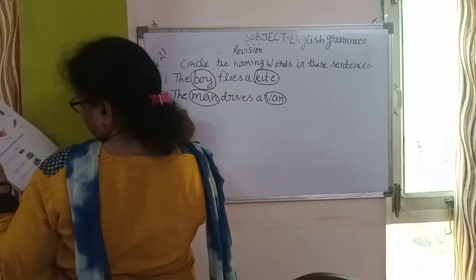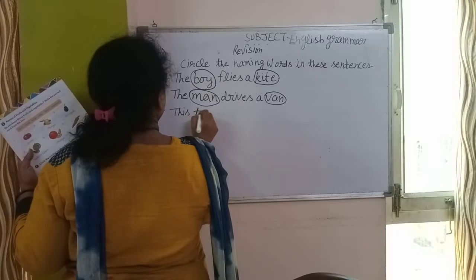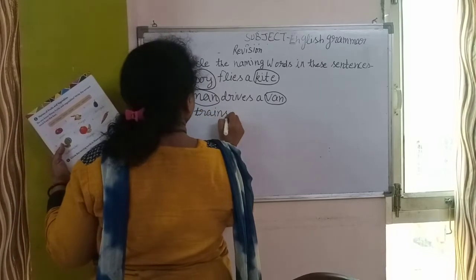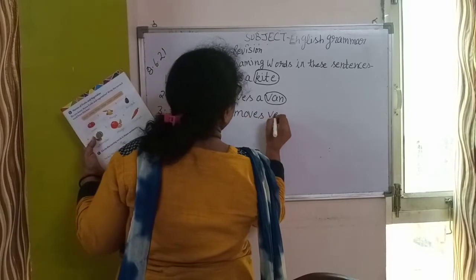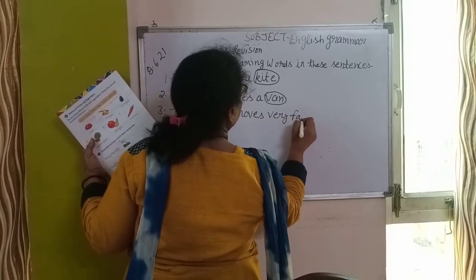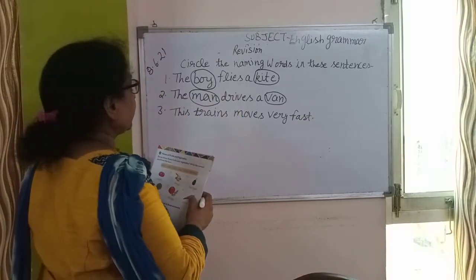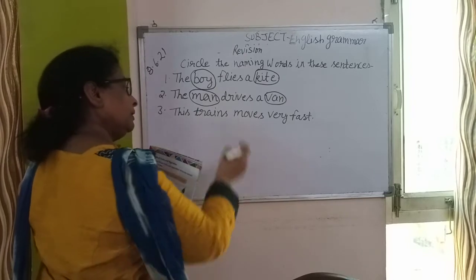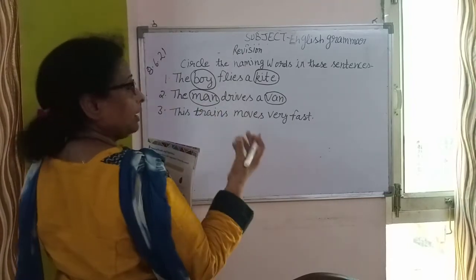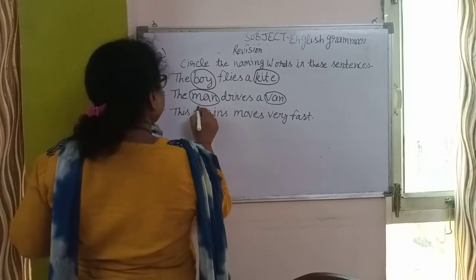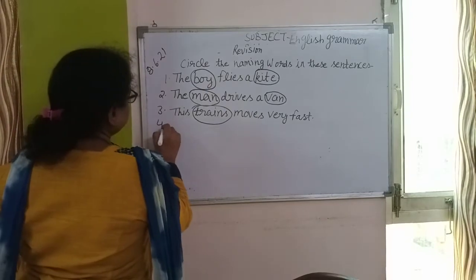Third है: This train moves very fast. इसमें कौन सा word naming word है? Train जो है, वो naming word है, क्योंकि वो एक vehicle है. इसलिए हम Train को circle करेंगे.